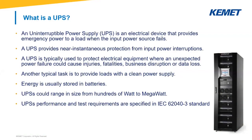What is a UPS? UPS — that is the acronym for uninterruptible power supply — is an electrical device that provides emergency power to a load when the input power source fails. One of the biggest characteristics of UPS is that it must provide near-instantaneous protection from input power interruptions. A device like this is used to protect all electrical equipment where an unexpected power failure could cause injuries, fatalities, business destruction, or data loss.